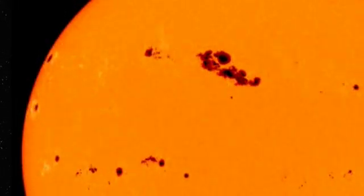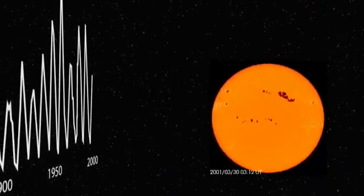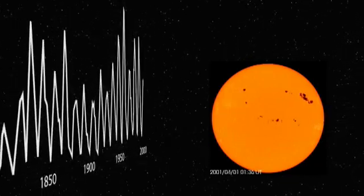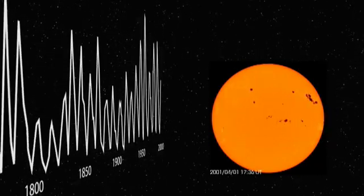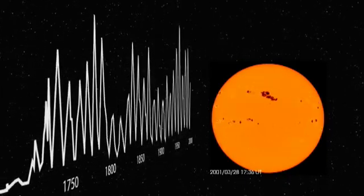Every 11 years or so, the sun goes through a cycle of having almost no spots to lots of spots called the solar activity cycle. The sun went through its last sunspot maximum in 2001, and it is currently in a quiet period in its cycle.